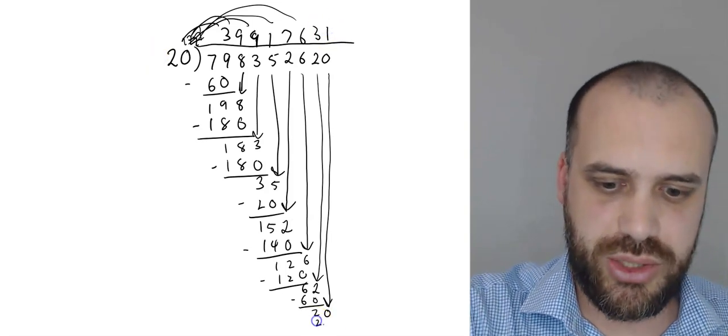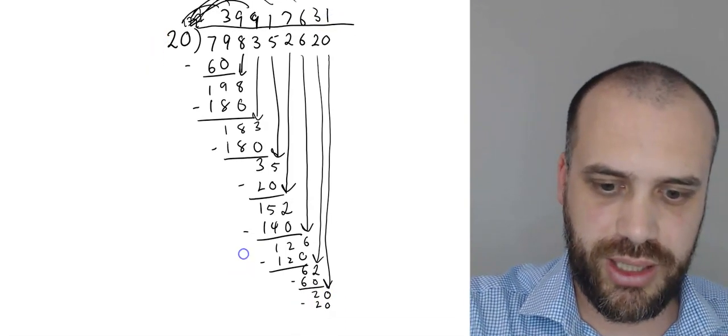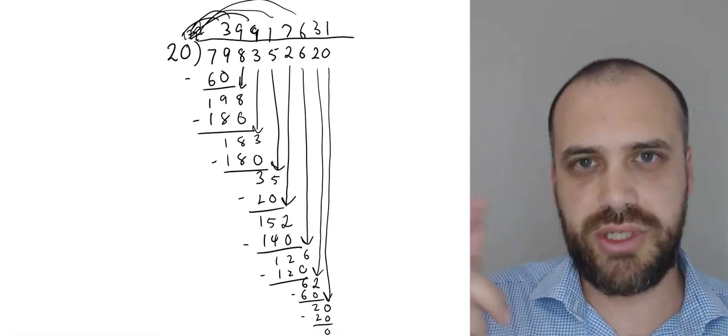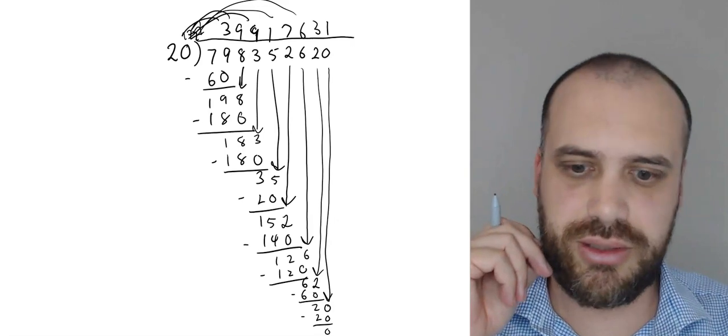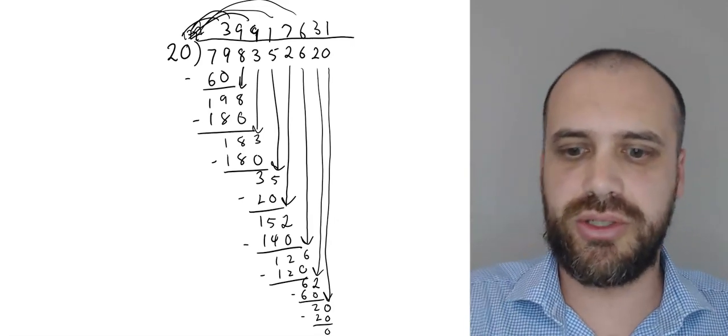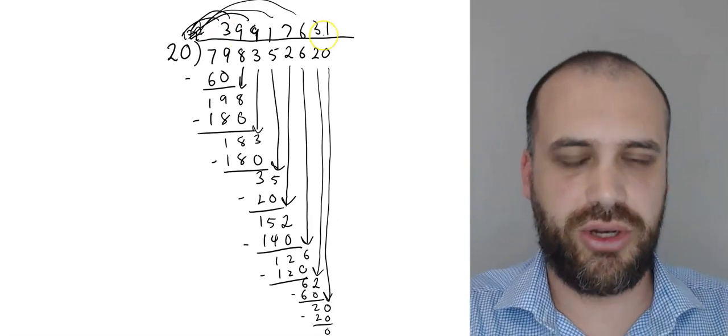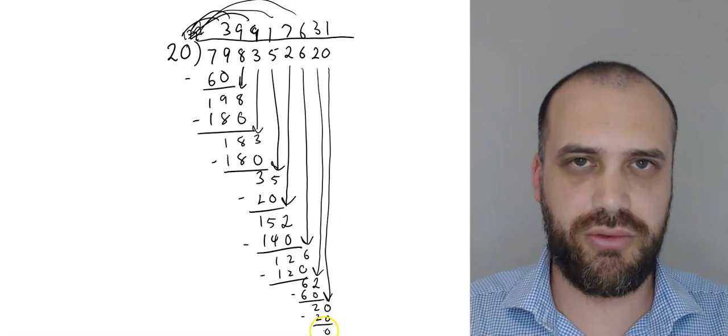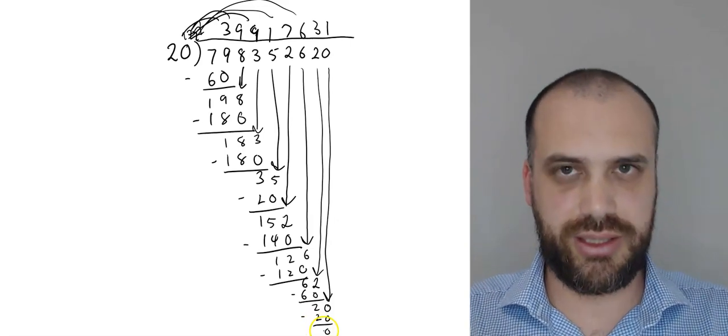20 goes into 20 exactly once. 1 times 20 is 20. Subtract one from the other. And we get 0. This is very, very special. Because 79,835,000... Whatever this number is. Goes into 20 exactly that many times. Exactly that many times. Remainder 0. No remainder. That is long division.